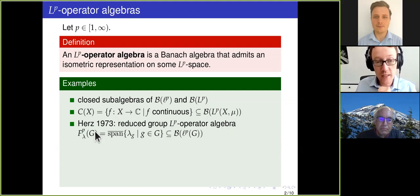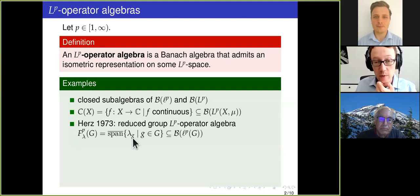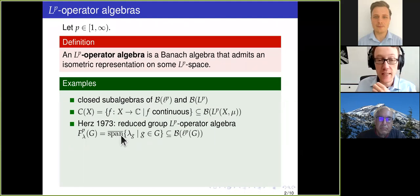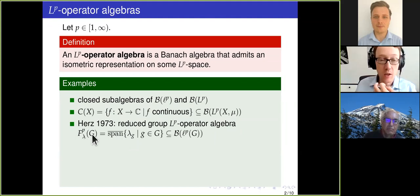These were not originally called reduced group LP operator algebras — this terminology goes back to Chris Phillips. They were originally called algebras of P pseudo functions. You start with a group G and consider the left regular representation of this group on the space little LP of G, where the group acts by translation. These translation operators, these isometries lambda_g, we take them all together and look at the closed linear span of that — a nice Banach algebra, which we call FP_lambda. This algebra encodes the representation theory of the group on LP spaces.